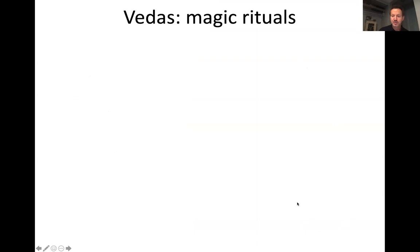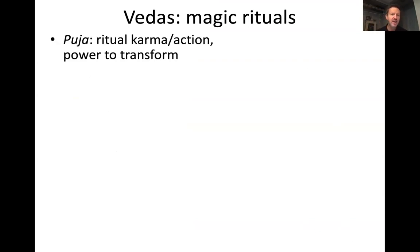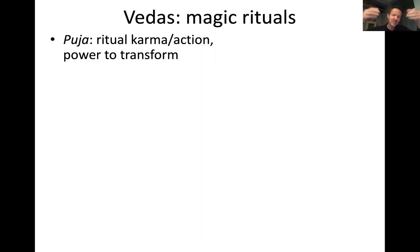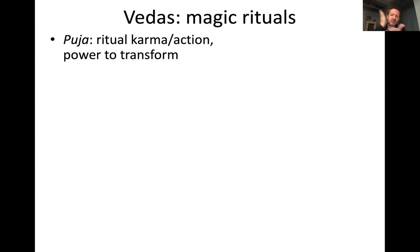The Vedas involve mostly magical rituals. A puja — P-U-J-A — is the name for a ritual ceremony you perform. The word karma literally means action in Sanskrit, but in the West it's more comprehensive — it's action and all the consequences of the action. We say someone has good karma or bad karma, meaning the consequences of their actions. When you perform pujas, you are creating good karma in this belief system — a power to transform yourself and the world, to keep it orderly.